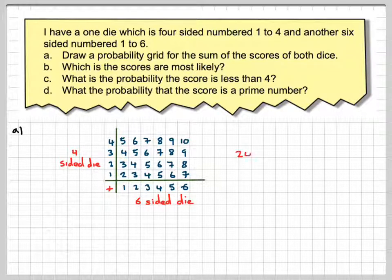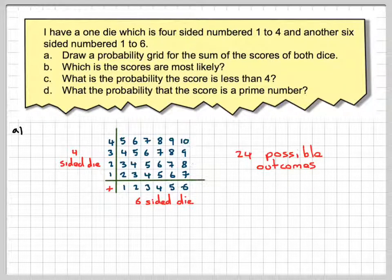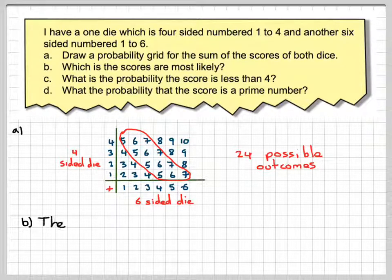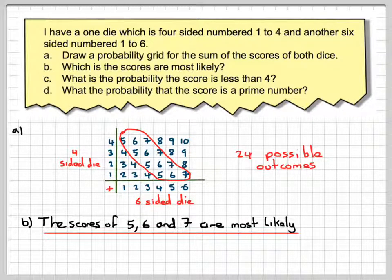Part B. There's 24 possible outcomes here, 6 times 4. Each entry represents the possible outcomes on the grid. Which of the scores are most likely? The most likely ones to occur are the 5, 6, and 7, because they all can occur 4 times each. So putting a circle around those, the scores of 5, 6, and 7 are the most likely.